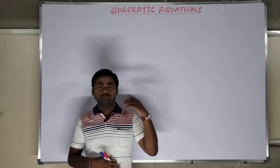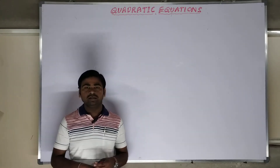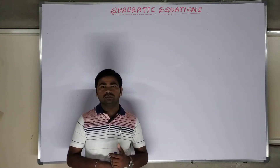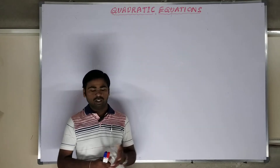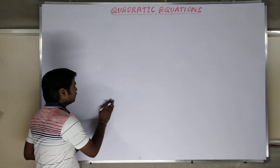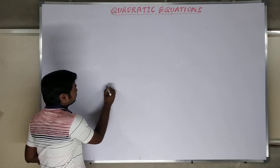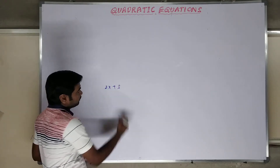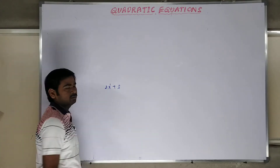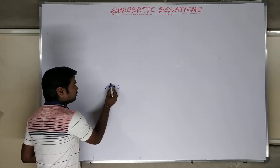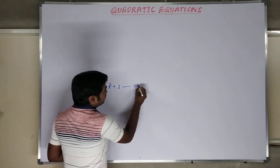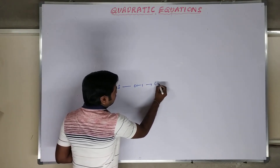When you go for the quadratic equations, in previous classes we discussed linear equations with two variables. Before coming into the quadratic equation, we have to know what is the basic equation. Let us take one equation: 2x plus 3. The degree of the equation — the variable power is 1. If the power of the variable is 1, the degree of the equation is 1, and this equation is called a linear equation.